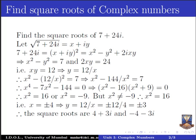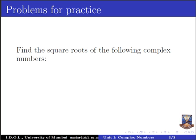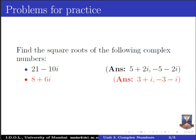Now let us go to the activity related to this video lecture — some problems for practice. Find the square roots of the following complex numbers. The first is 21 minus 10i; the answers are 5 plus 2i and minus 5 minus 2i. The second is 8 plus 6i; the answers are 3 plus i and minus 3 minus i. The third is 3 minus 4i; the answers are 2 minus i and minus 2 plus i. Solve these problems to confirm that you have understood the technique.